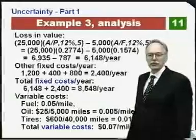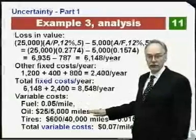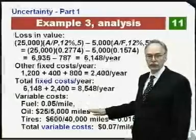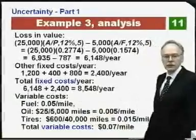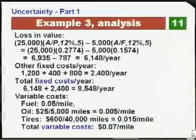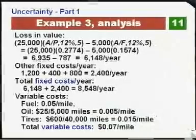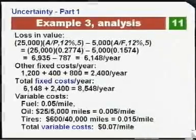Variable costs do depend on miles driven. Fuel certainly does, as does oil if we follow the oil change schedule, and tires. Total variable costs per mile are $0.07 — the biggest component is fuel at $0.05 per mile, oil at about half a cent per mile, and tires at one and a half cents per mile.